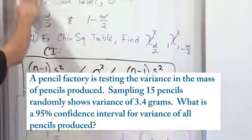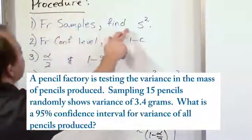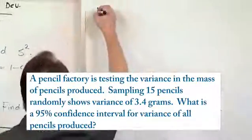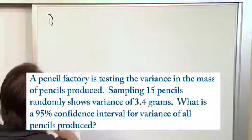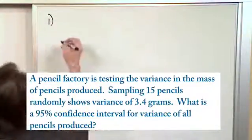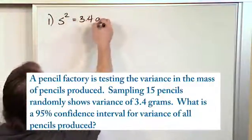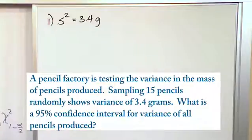The first step is from the samples, find the sample variance. And that's actually given to us in the problem because it says right here the sampling of 15 pencils randomly shows a variance of 3.4 grams. So S² is 3.4 grams. That's given to us. We don't have to calculate it. It's just the sample data that we have.